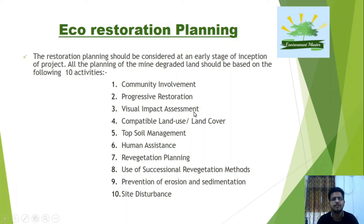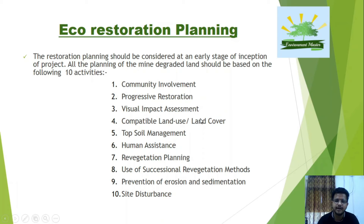For ecosystem planning, particularly for degraded mine ecosystems, 10 steps are taken: community involvement, progressive restoration, visual impact assessment, compatible land use and land cover, topsoil management, human-assisted re-vegetation planning, use of successional and re-vegetation methods, prevention of erosion and sedimentation, and site disturbance management.